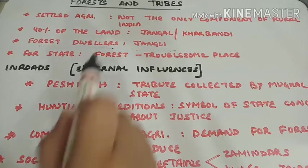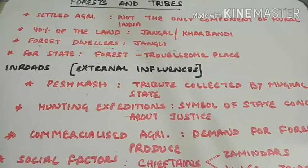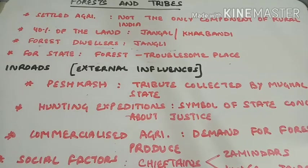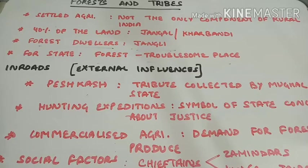For the state, the forest was considered a troublesome place. As mentioned in the Jataks, people used to escape the government and the state and live in forests, defying the state authority. Forests were also a place of insurgency — people would revolt against kings. And in certain cases, the heads of these tribes became kings, established their own tribal kingdoms, and thus posed a challenge to the authority of the state.